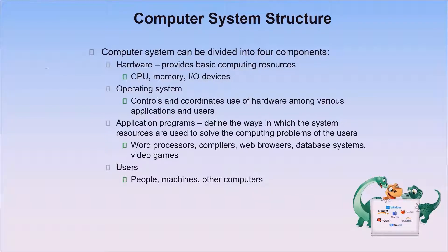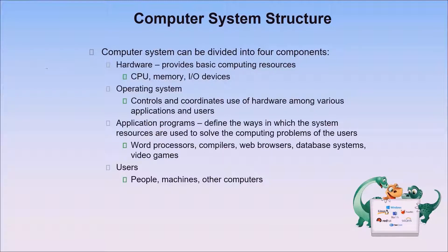Next are application programs. They define the ways in which system resources are used to solve the computing problems of users — word processors, compilers, web browsers, database systems, video games, and so on. These application programs need a lot of resources; for instance, games often consume a lot of memory. The operating system is responsible for allocating those resources to application programs. When an application needs to run, it requests the amount of memory it needs from the operating system.